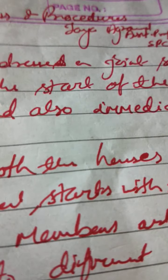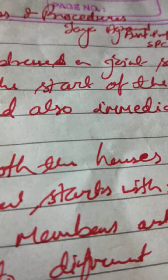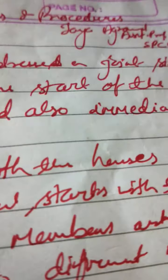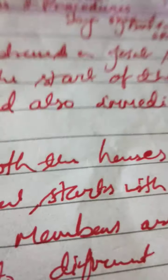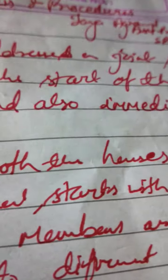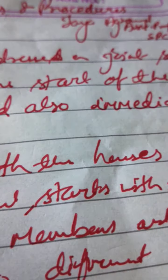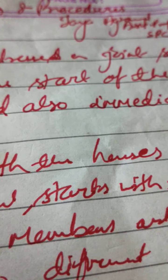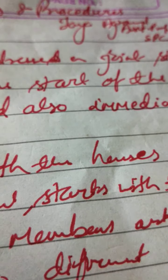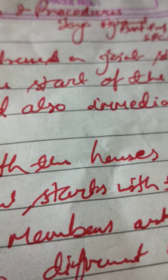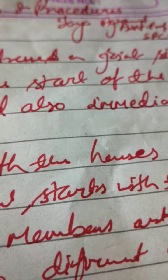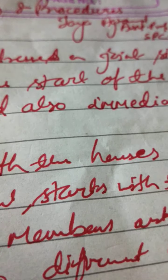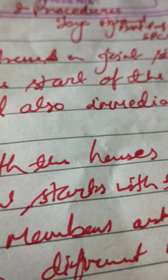There is also a provision for a half-hour discussion on matters of sufficient public importance on which a question was earlier raised but which needs further explanation. When members want to take the government to task for a recent act of omission or commission having serious consequences, they may call for interruption of normal business and introduction of an adjournment motion. Its adoption by the house amounts to a sort of censure of the government.